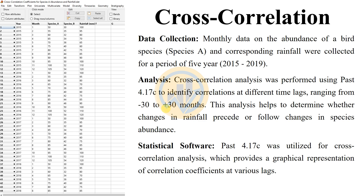The lag range of minus 30 to plus 30 months covers the full 5-year span, with data collected every 12 months — 12 multiplied by 5 gives 60 months total. This analysis helps to determine whether changes in rainfall are periodic or follow changes in species habitat.